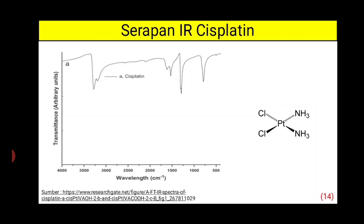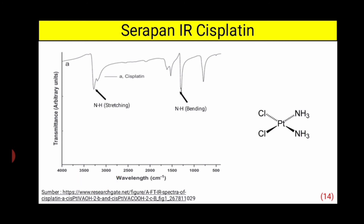Serapan IR Cisplatin. Cisplatin mempunyai serapan IR yaitu N-H stretching dan N-H bending. N-H stretching atau renggangan dapat dilihat pada serapan 3000–3500 cm⁻¹, bentuknya lemah dan melebar. Sedangkan N-H bending atau tekuknya ada di serapan 1000–1500 cm⁻¹.